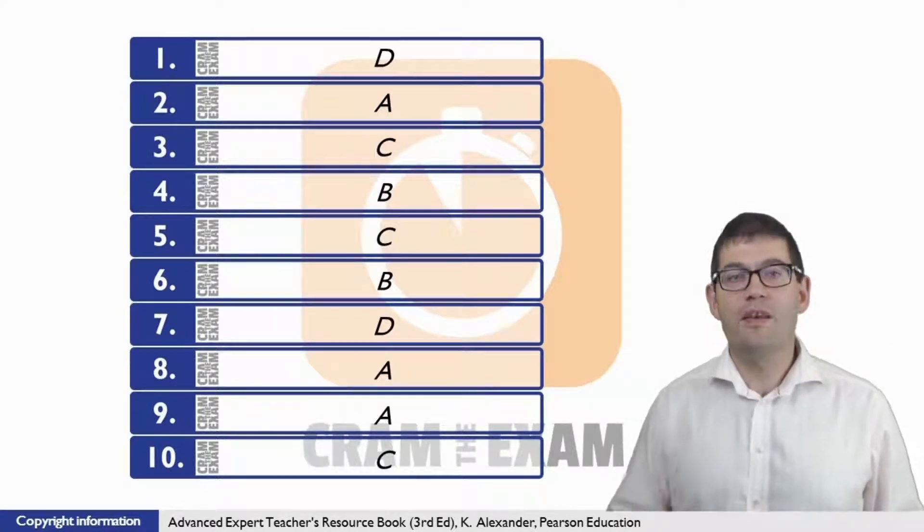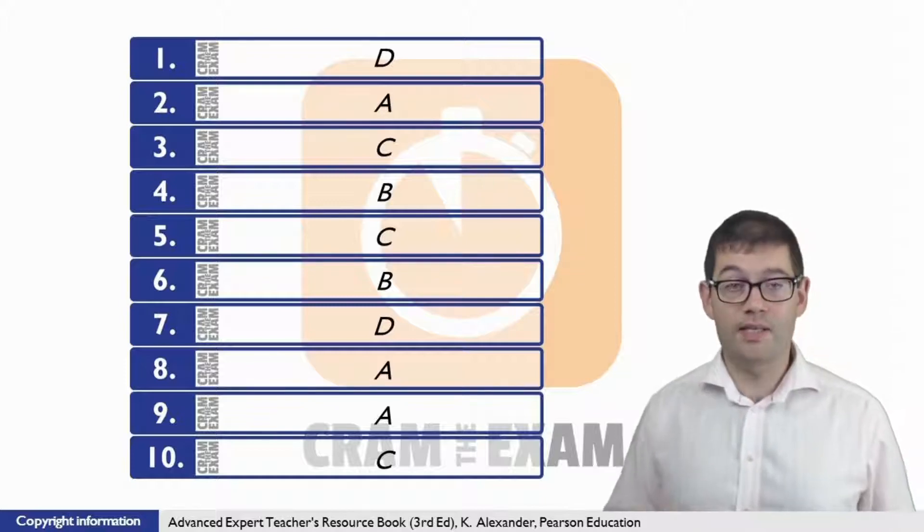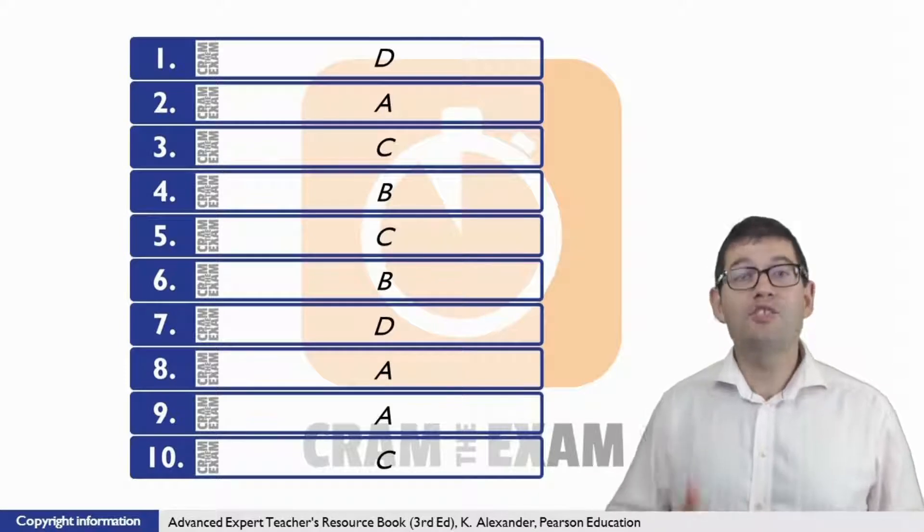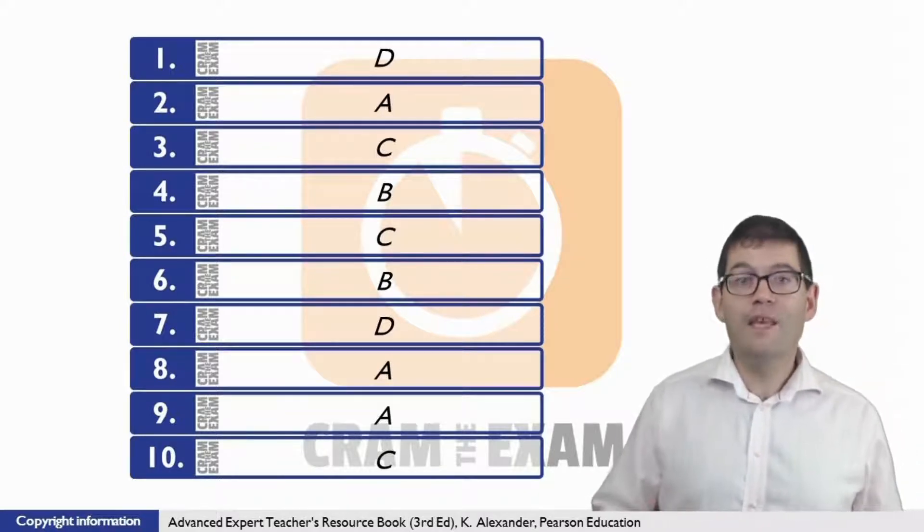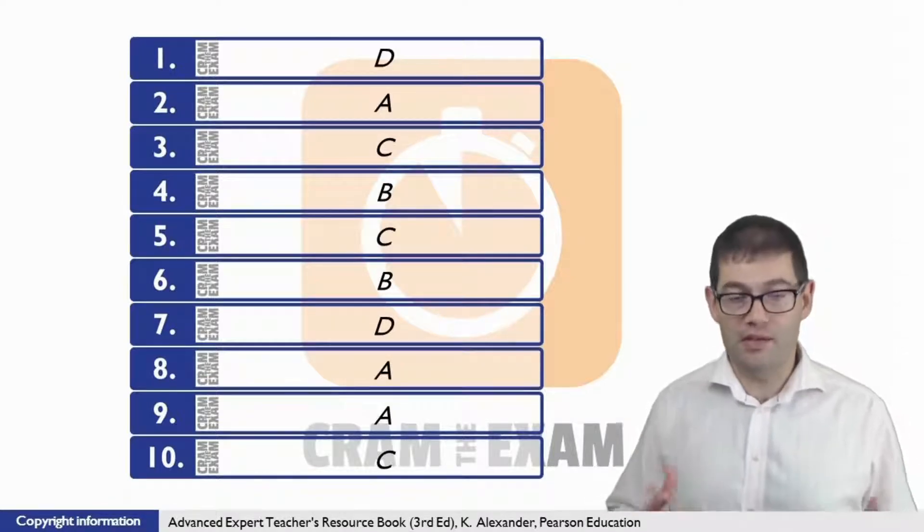For question 3, the answer is C. Chris and Joanna mention the advantages and disadvantages of working together. Two thirds of the way down C, an advantage is mentioned which is having lunch with the children. This is then followed by a disadvantage, both of them being stressed.